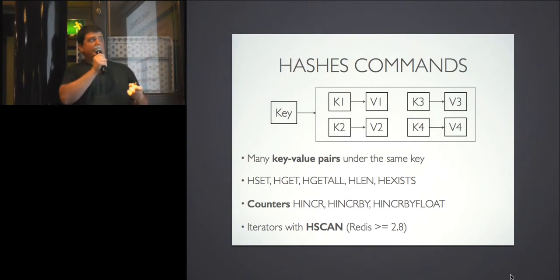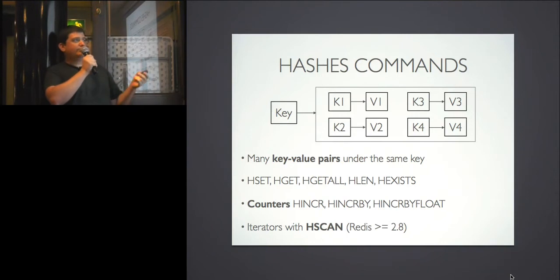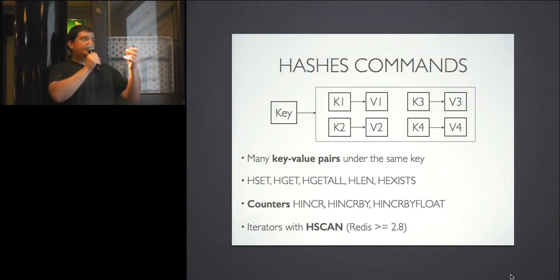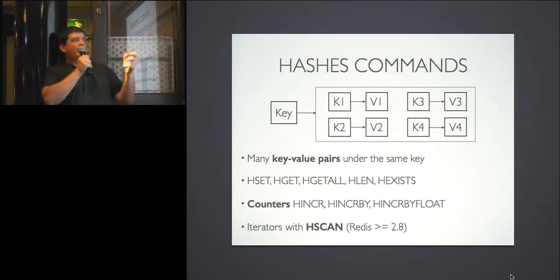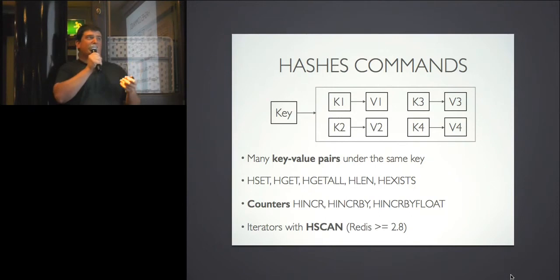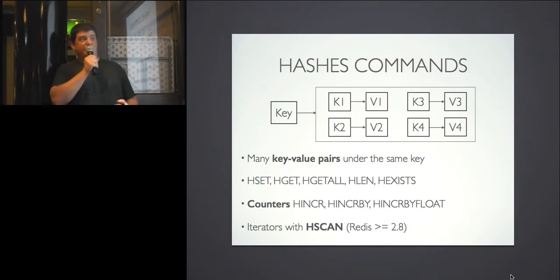Hashes are basically key-value pairs inside another key. The operations are similar to the regular key-value ones but with an H prepended — HGET, HSET, and so on. You can have counters with HINCRBY, HINCRBYFLOAT, and iterators. You might wonder why this structure is needed instead of longer namespaced keys. The reason is memory efficiency: if you have lots of keys, storing them inside a hash can be more memory-efficient for big installations.